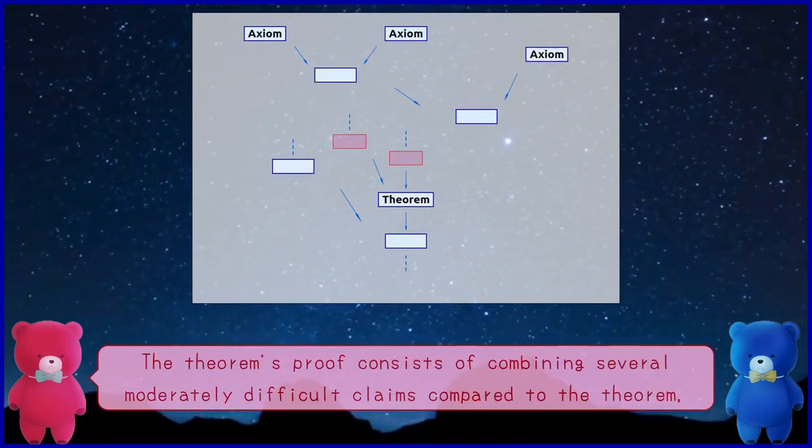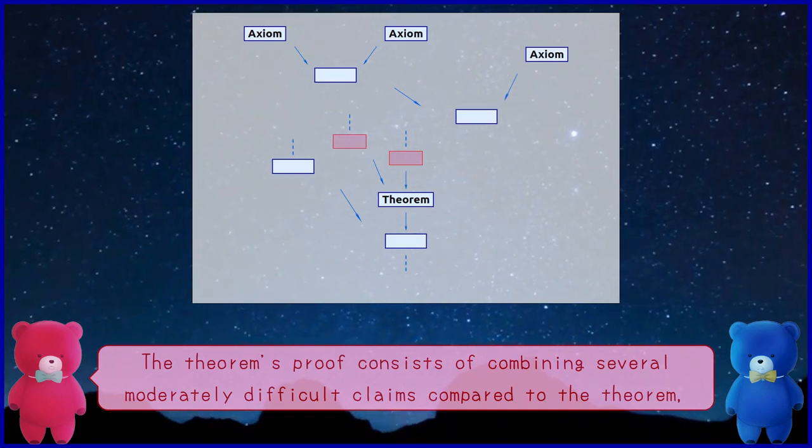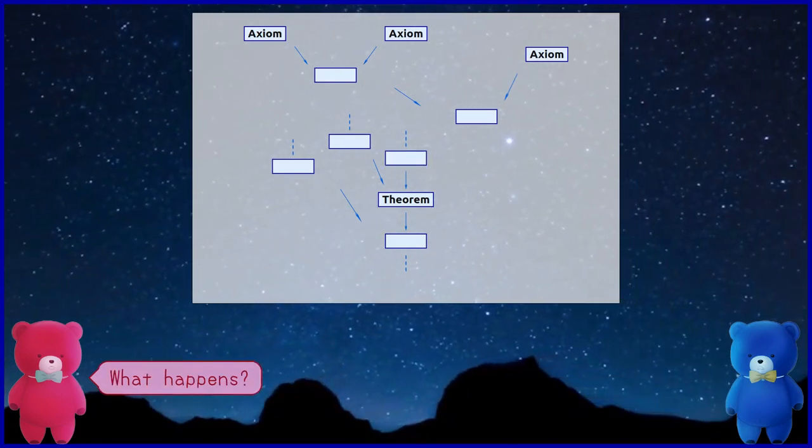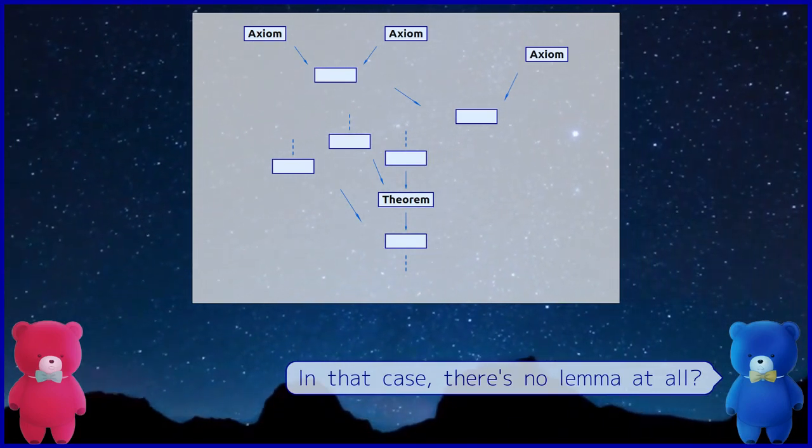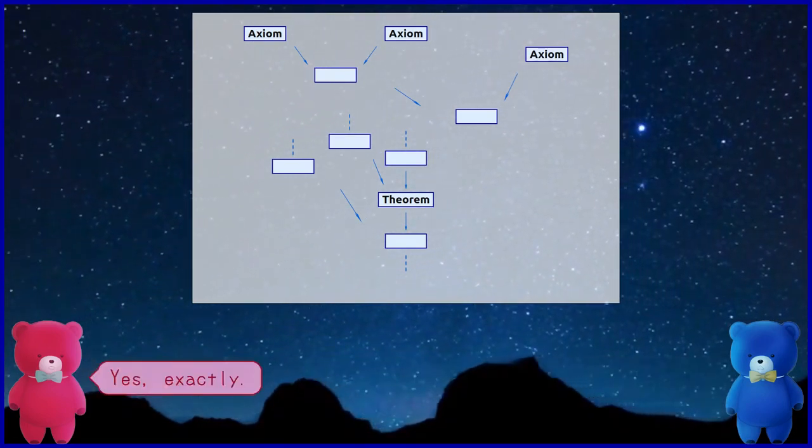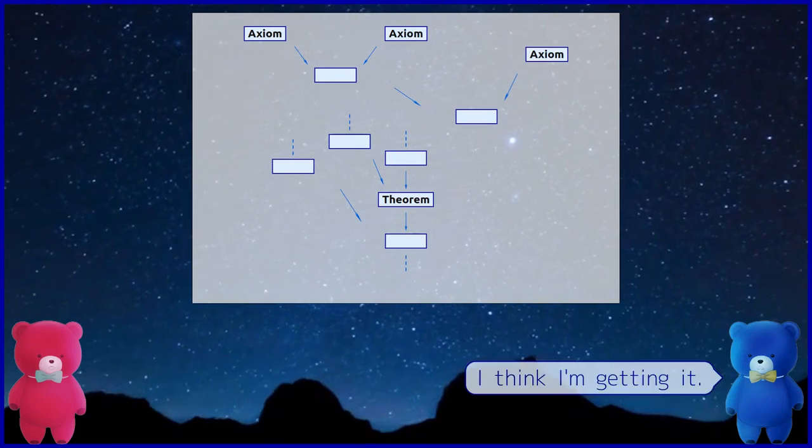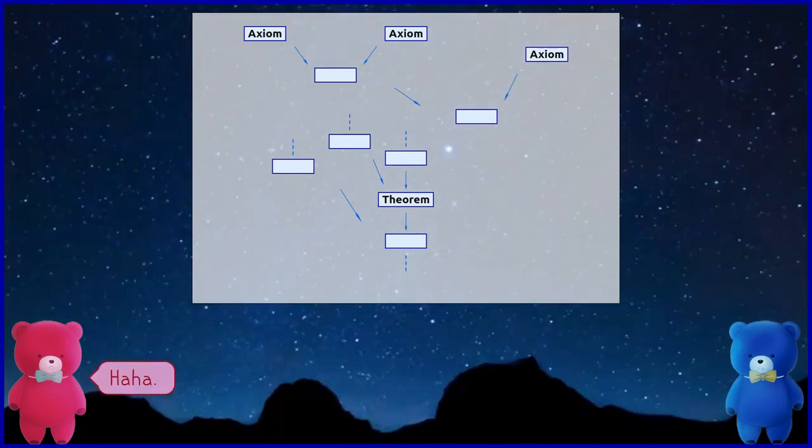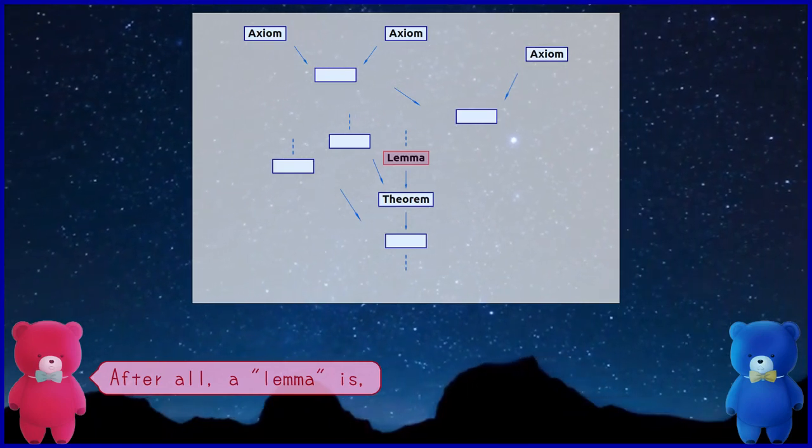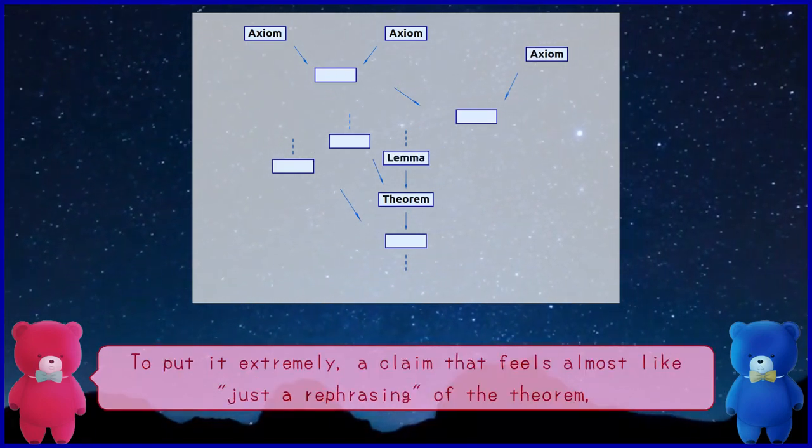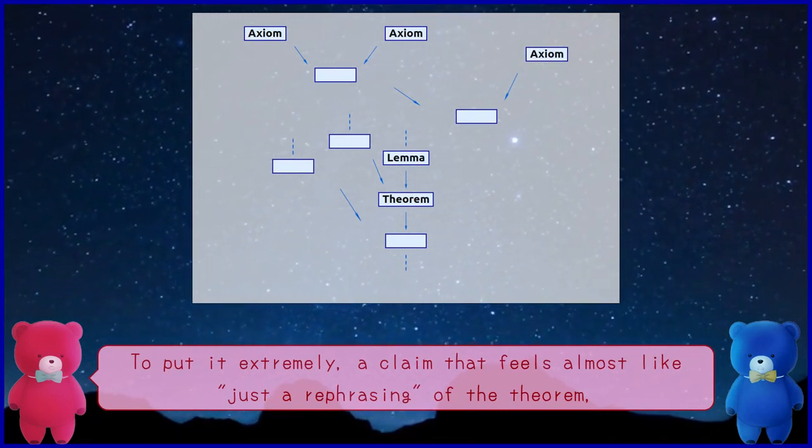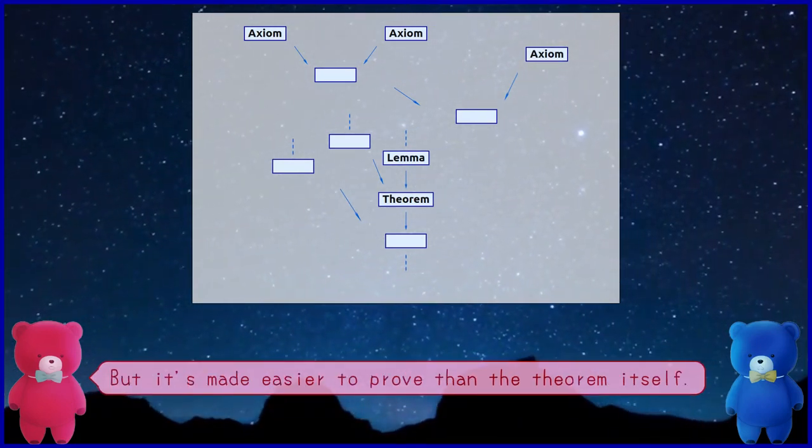Oh I see. Conversely, if the theorem's proof consists of combining several moderately difficult claims compared to the theorem, what happens in that case? There's no lemma at all. Yes, exactly. I think I'm getting it.